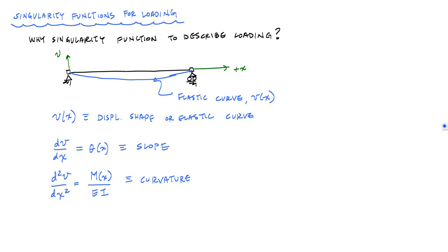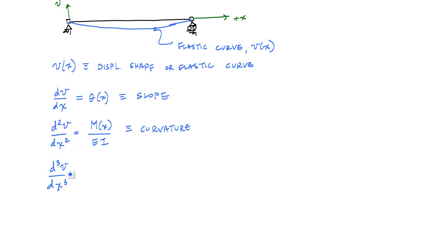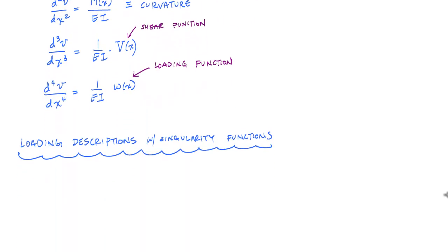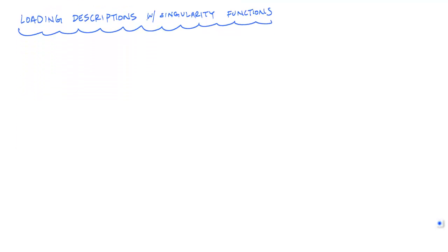Another approach: if you keep taking derivatives, the derivative of the moment is the shear, and one more derivative gives d⁴v/dx⁴ equals 1/EI times w of x, where w of x describes the loading function. If you can describe the loading function in one equation using singularity functions, then you just integrate four times and you get the displacement shape. You can also start from the moment function using singularity functions, integrate twice — the double integration method — and get the displacement shape with just one function instead of five.